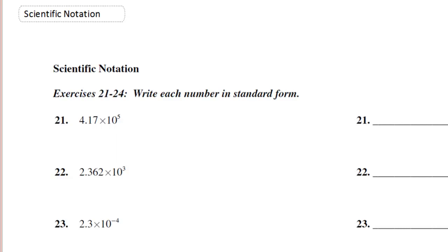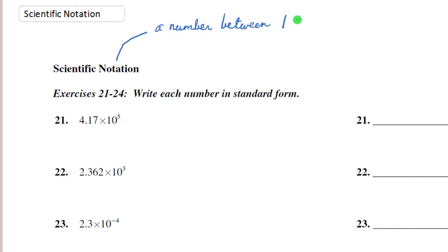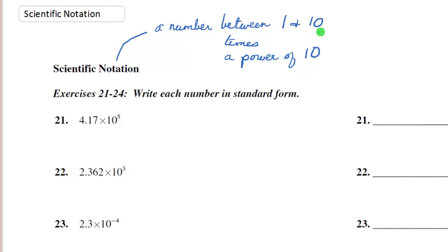In this video we do a little review on scientific notation. Scientific notation is a way for us to write very large numbers or very tiny numbers in a form that lets us work with them. The form has to be as follows: you have to write a number between 1 and 9.9999, and then times a power of 10. That would be scientific notation.